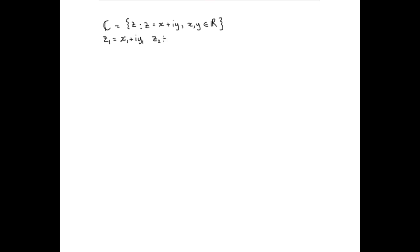It's best defined if we give two complex numbers z1 and z2, with real parts x1 and x2 and imaginary parts y1 and y2. Addition was defined as the addition of the real parts to get the real part of the sum, and the addition of the imaginary parts to get the imaginary part of the sum. So that's the definition of addition.